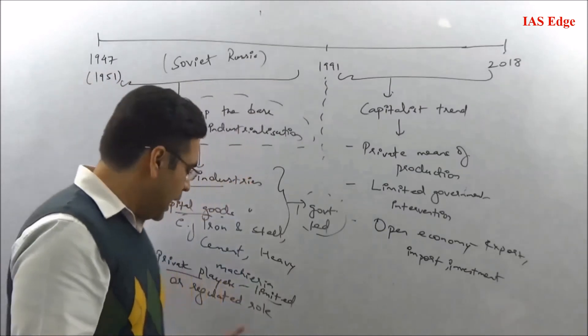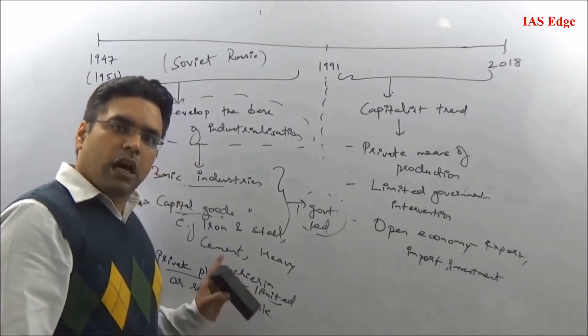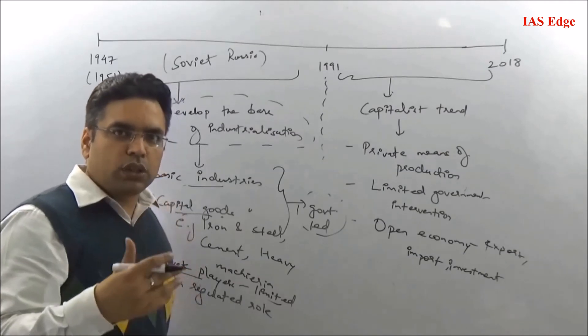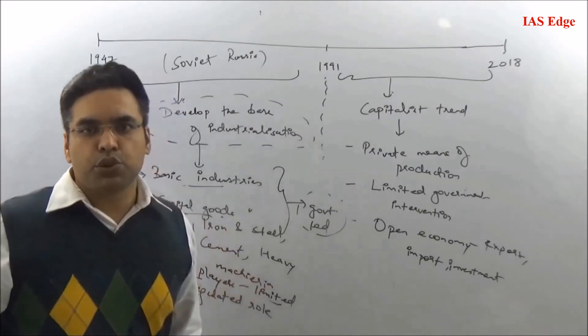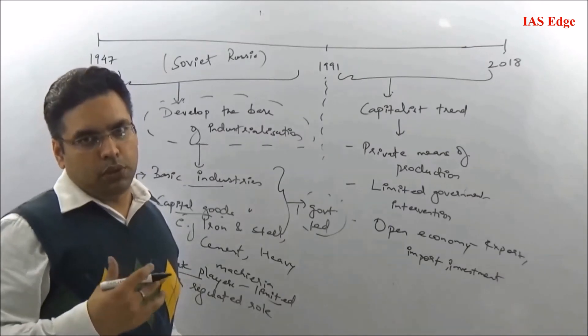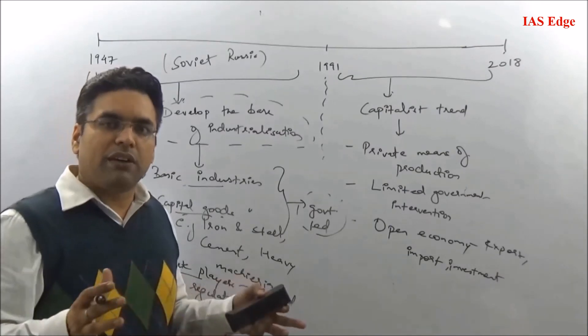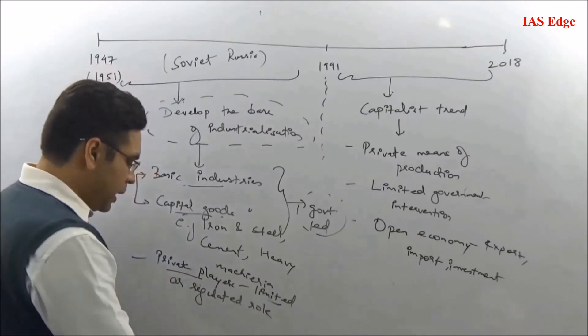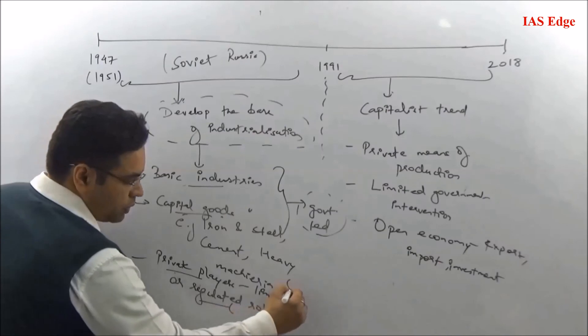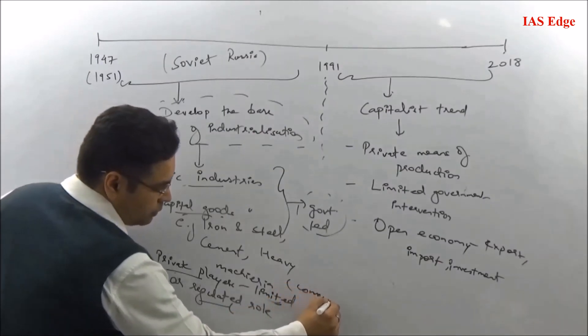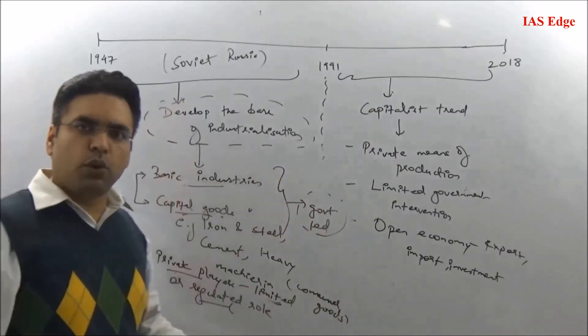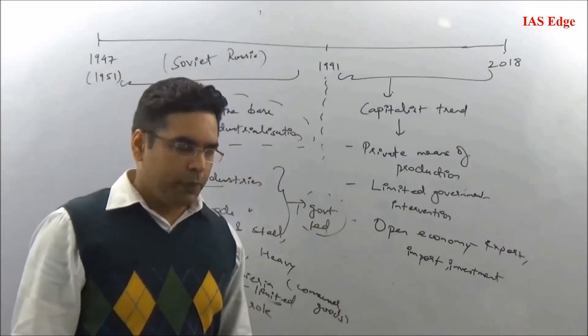This model was based on Soviet Russia. The idea was to develop capacity. These basic and capital goods were critical industries, so government took the lead role. Private players had limited or regulated role, mainly covering areas of consumer goods. Socialism also says that government should ensure equitable distribution of wealth so people don't create divide in society between have and have not.